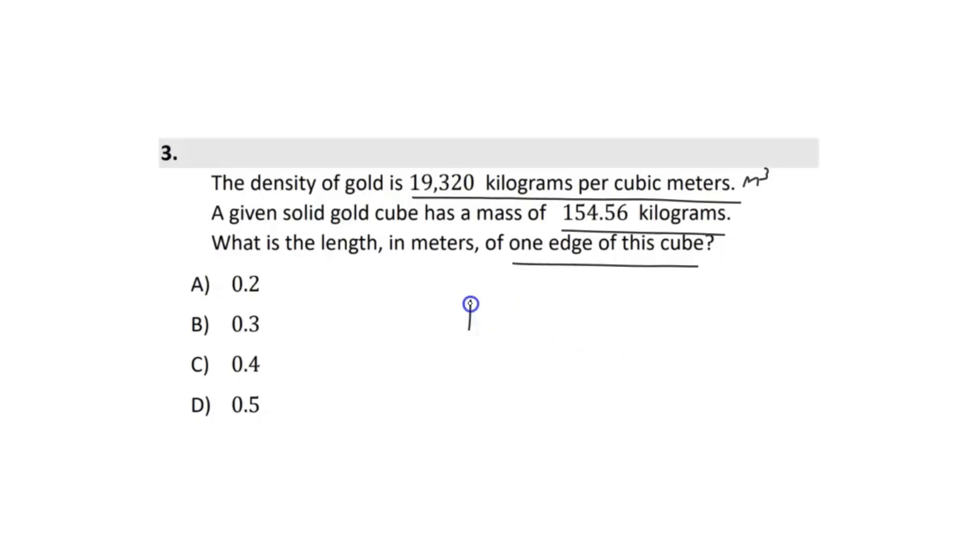All right, so first, what do we know? Well, you kind of just have to know, I'm not sure if this is on the reference sheet, it probably is, that density is equivalent to mass over volume. Okay, so let's rearrange this equation into volume equals. So let's multiply volume on both sides and then divide both sides by our density. That's going to be equivalent to our mass over our density.